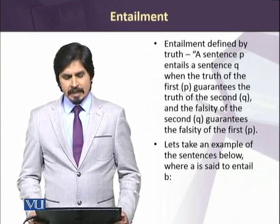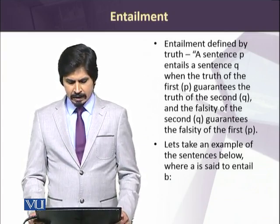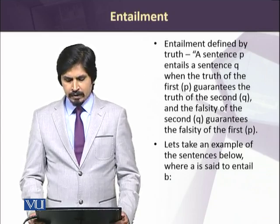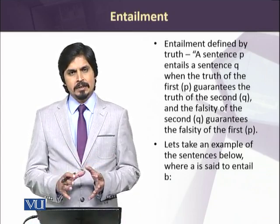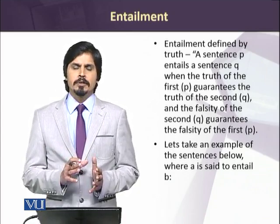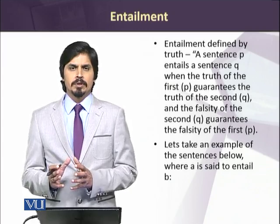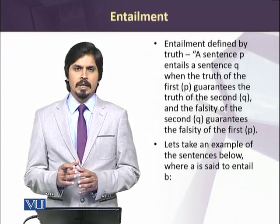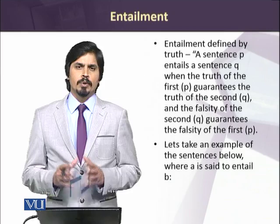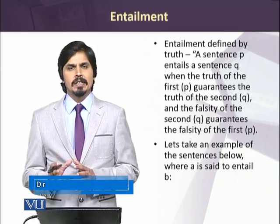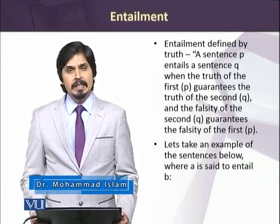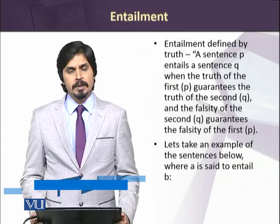We can roughly say that a sentence P entails a sentence Q when the truth of P guarantees the truth of Q, and the falsity of Q — that means if Q is wrong or not correct — also makes us believe in the falsity of P. In that case, we can say that P entails Q and they are in a relationship of entailment.